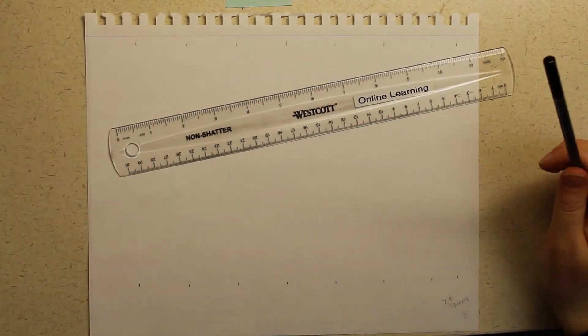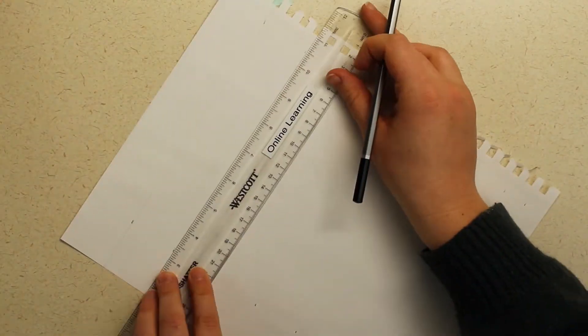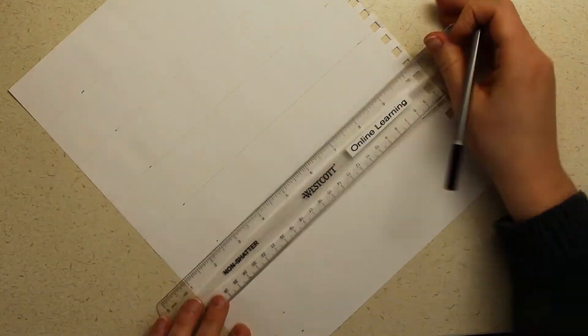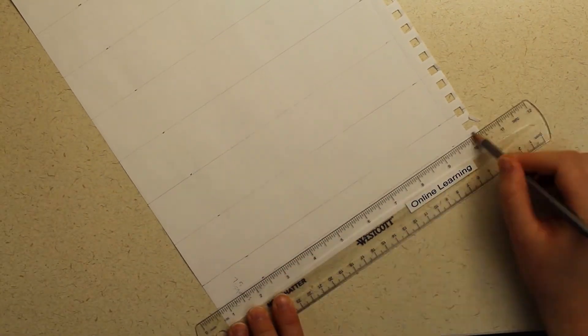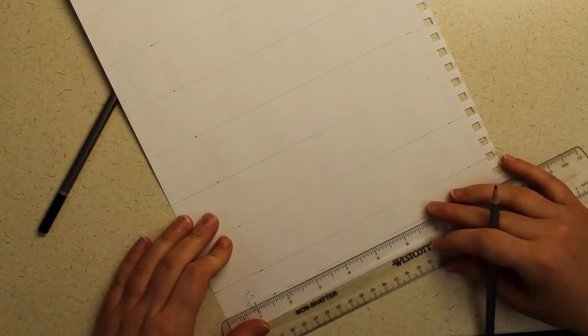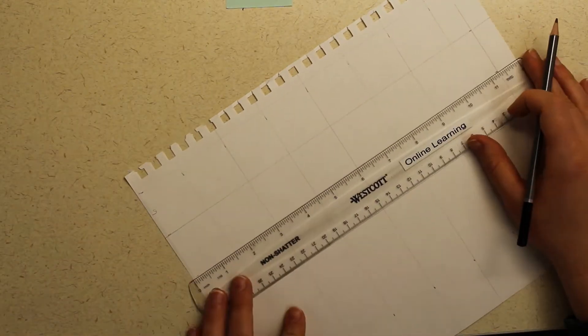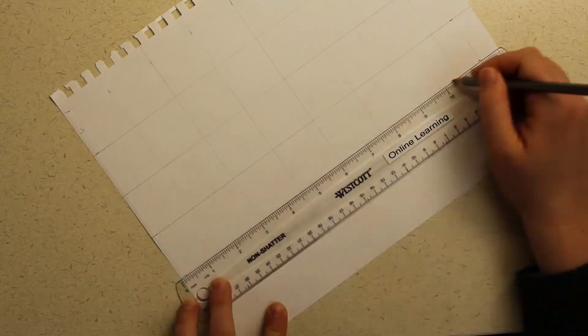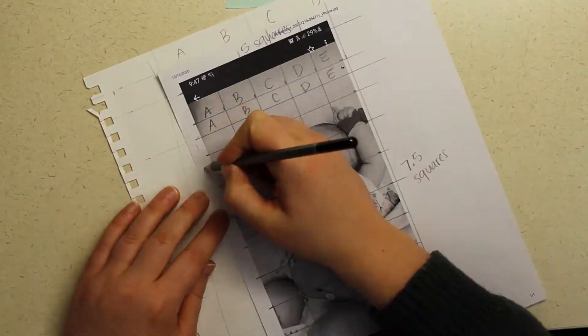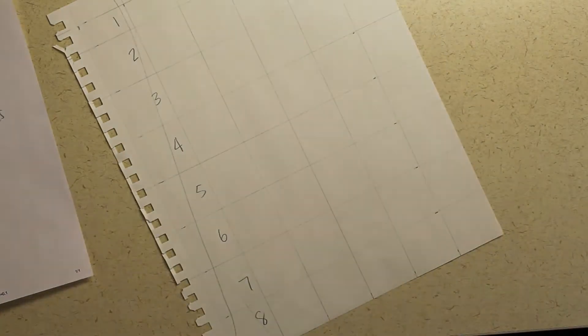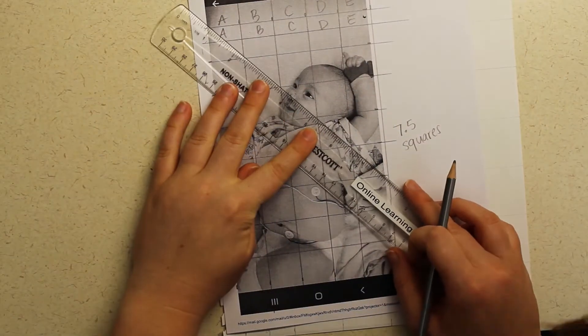Remember to make squares, the width and height need to be exactly the same, so you definitely wouldn't do 1.5 inches across and then 1 inch up and down because your squares would be distorted. I added in the letters across the top and the numbers across the side just like I had on my photograph.